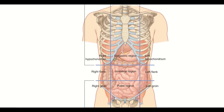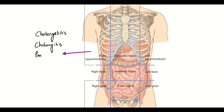Let's first divide the origin of abdominal pain on the basis of location. The right hypochondrium has the liver, a part of the pancreas, and lungs. The diseases of these organs will result in pain in this quadrant. So, cholecystitis, cholangitis, pancreatitis, pleurisy, hepatitis, and Budd-Chiari syndrome, which involves the liver, are associated with pain in this quadrant.